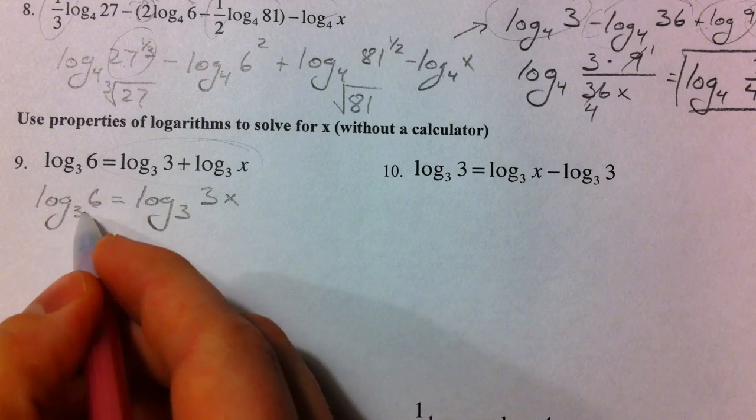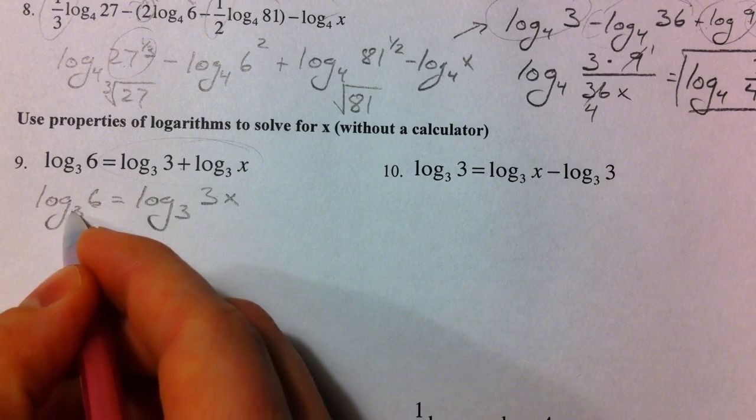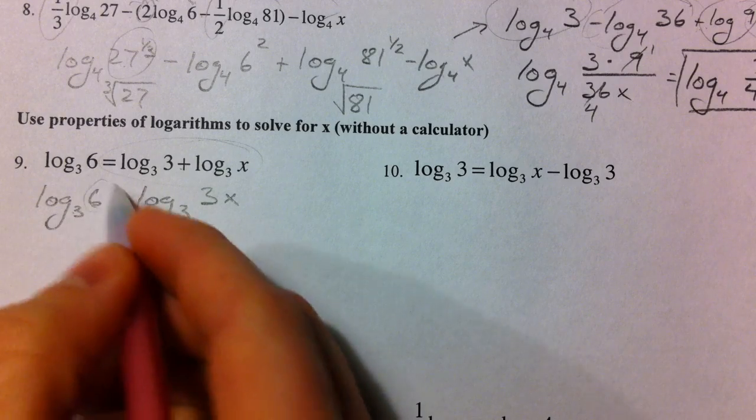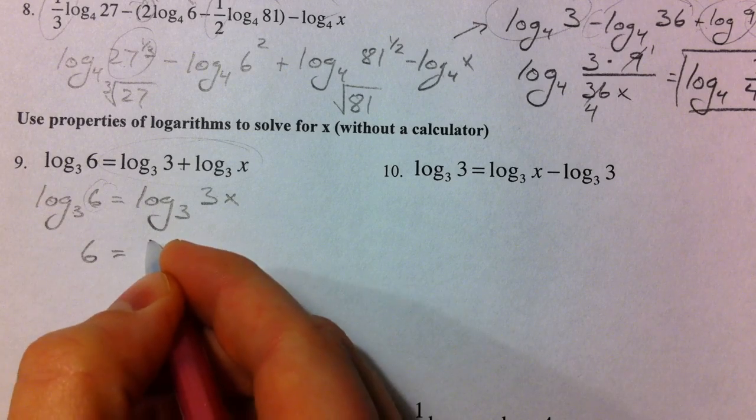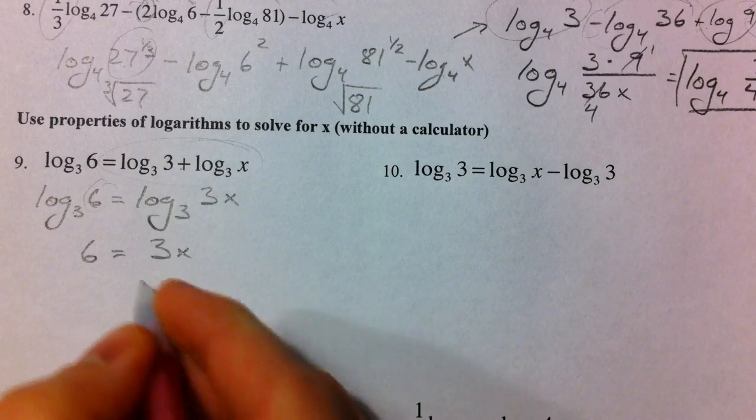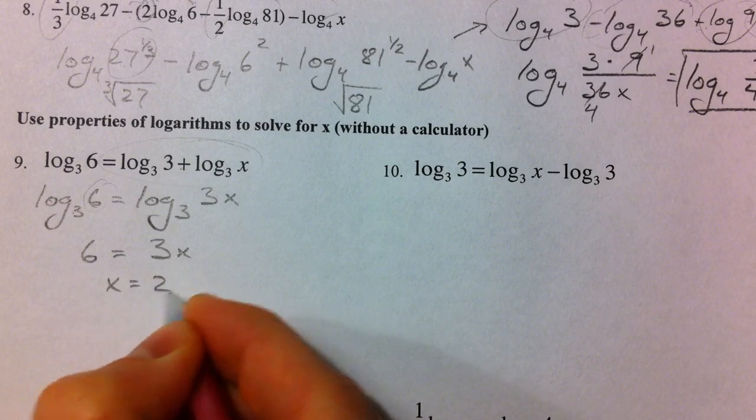And so what we can say is logically, if we're taking the log of one side and the log of the other, the 6 has to be equal to the 3x. And so x has to be equal to 2.